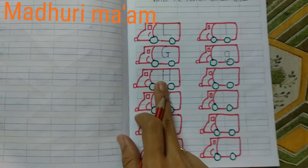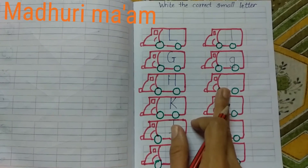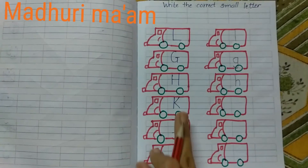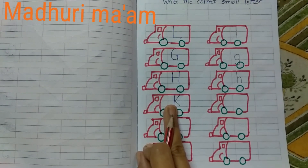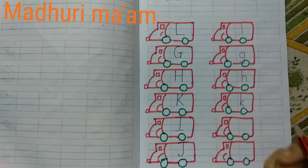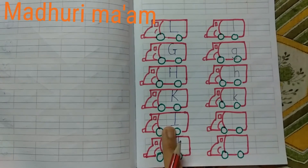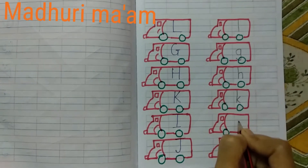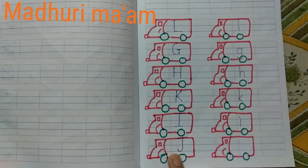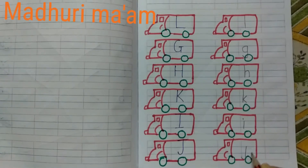Now which letter is this? This is capital H. So what comes here? Small h. Then the next letter — this is capital K, so here write small k. Then next letter is small i. And then what is this? This is capital J, so here small letter j will come.